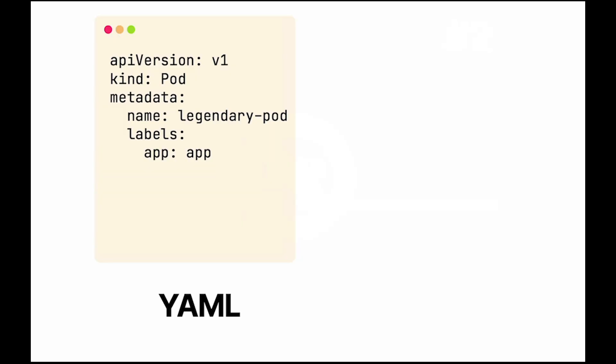Time for tip number two: maps and lists. Let's start with maps. Maps let you associate key-value pairs. On your screen you can see an example of a YAML file. On the first line, we have API version as a key and v1 as the value. On the second, we have kind as the key and pod as the value, and so on and so forth. Maps can also be nested, and in Kubernetes we usually nest a lot of maps.